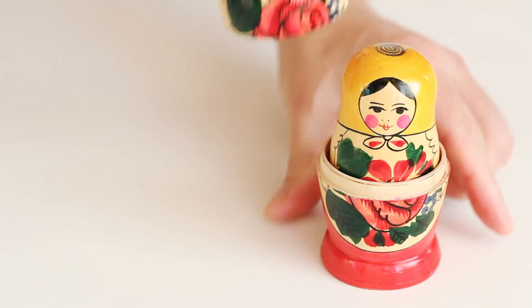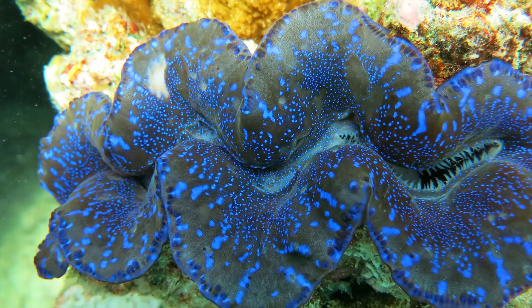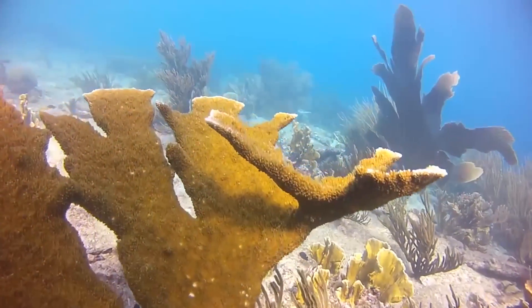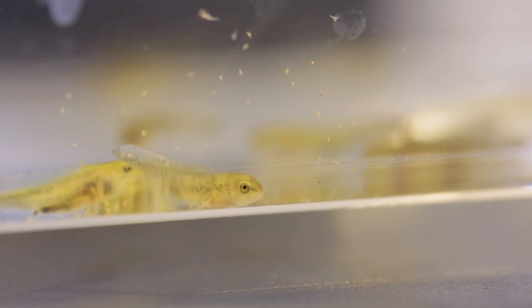That cell within a cell relationship, like a Russian matryoshka doll, occurs in giant clams. It occurs in corals. It occurs in sea slugs. But there are no other real known examples of a symbiont entering into the cells of a vertebrate.